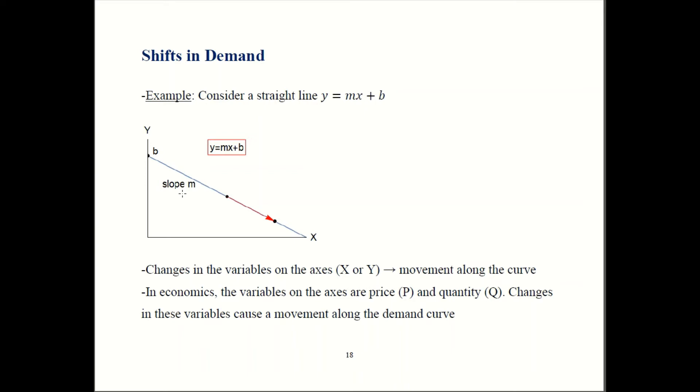So we change the variables that are on the axis - we change x or we change y - that just gives you a different point on the same curve. If you change x from this x to that one over here, it's still the same line. It has the same slope, the same intercept. It's the same line, just going to a different point on it.